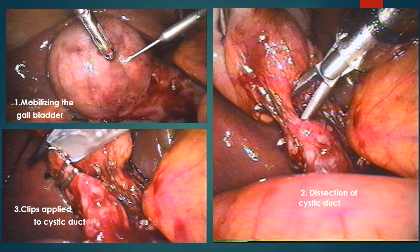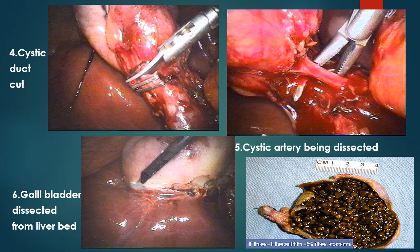Method of laparoscopic cholecystectomy: first, mobilize the inflamed gallbladder. Identify the cystic duct. Apply clips and cut the cystic duct between the clips using scissors. Then mobilize the cystic artery, apply clips, and cut similarly. The gallbladder is mobilized from the liver bed using diathermy and delivered through one of the ports. The opened gallbladder reveals multiple stones.